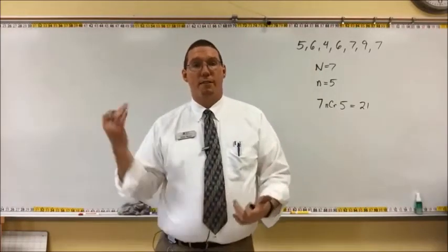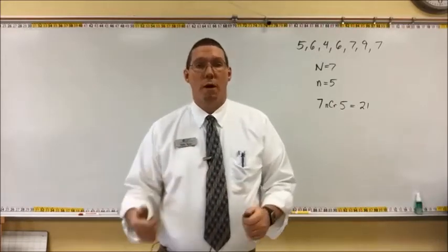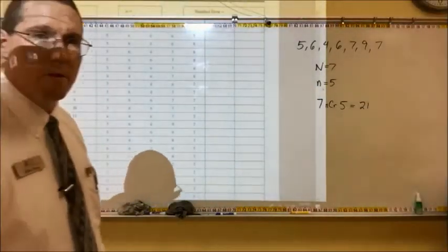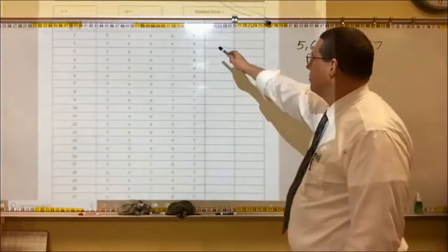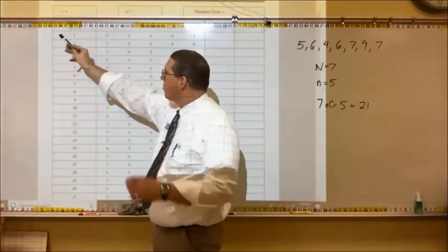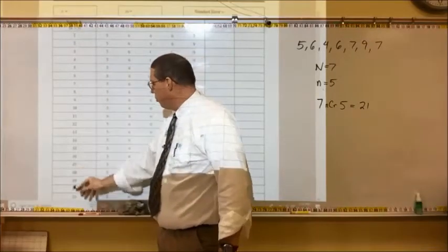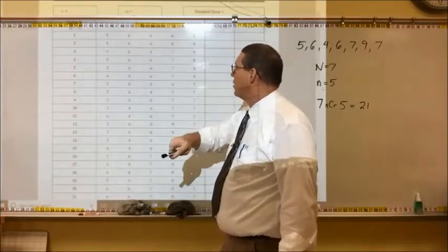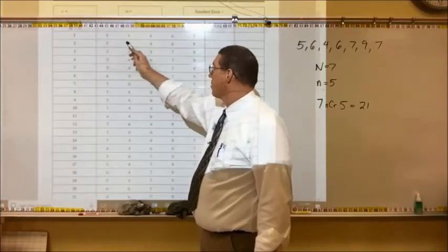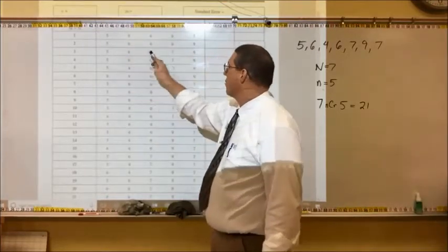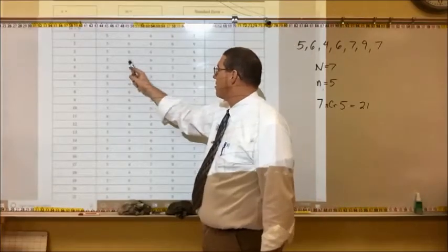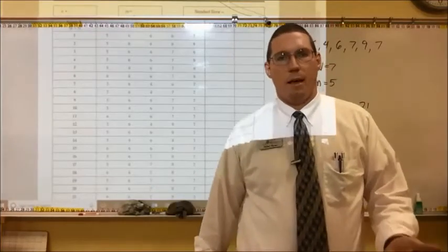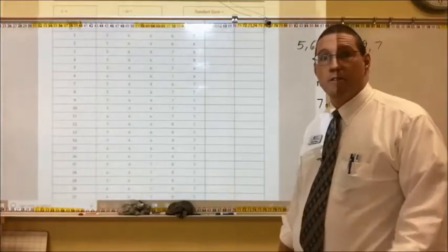So there are 21 possible samples that we could take with a sample size of 5 out of a population of 7. What I'm going to do right now is project up onto this board all 21 of those possibilities. This is the sample number, so 1 through 21. One of the samples is 5, 6, 4, another 6, and a 7. Another sample is 5, 6, 4, 6, and 9. Then 5, 6, 4, 7, and 9. So there are 21 unique possibilities for a sample out of the 7 numbers.